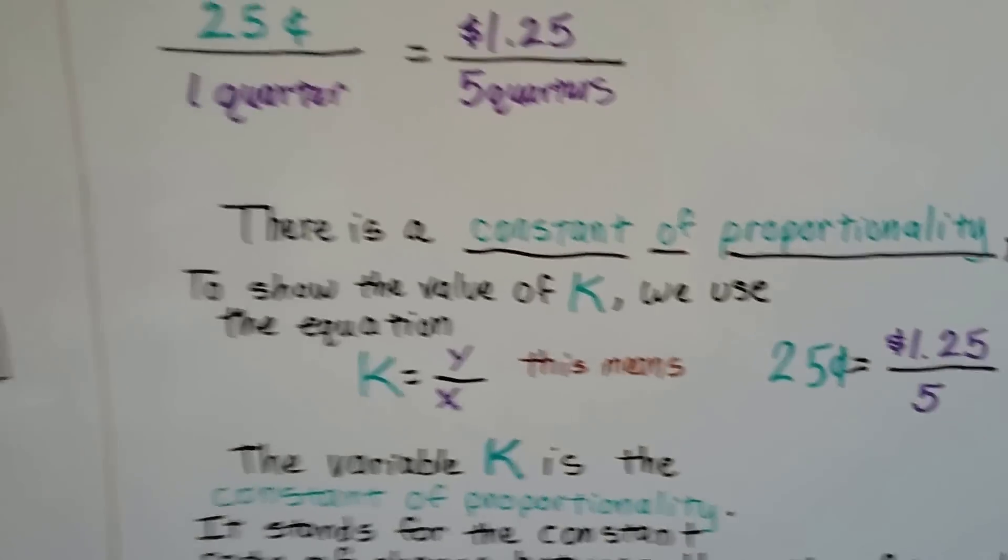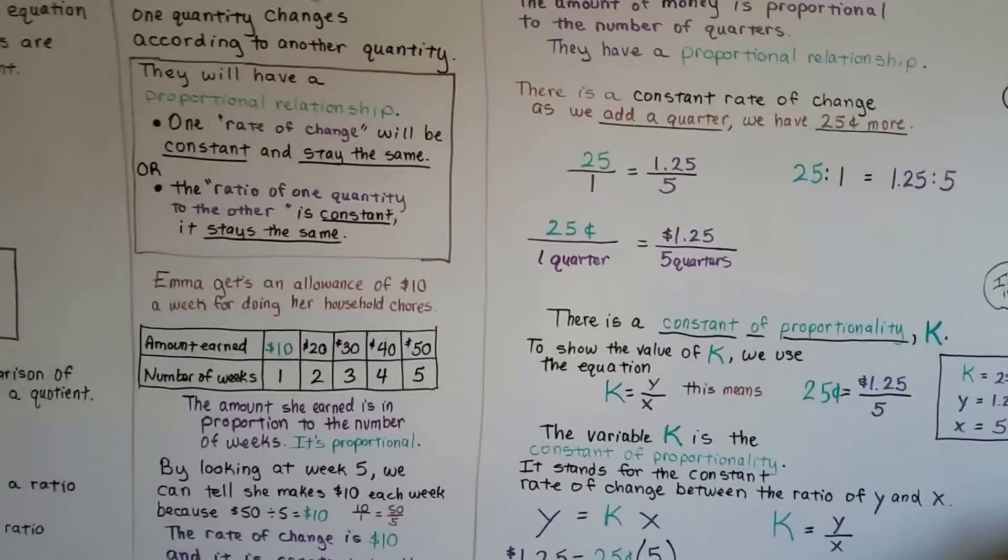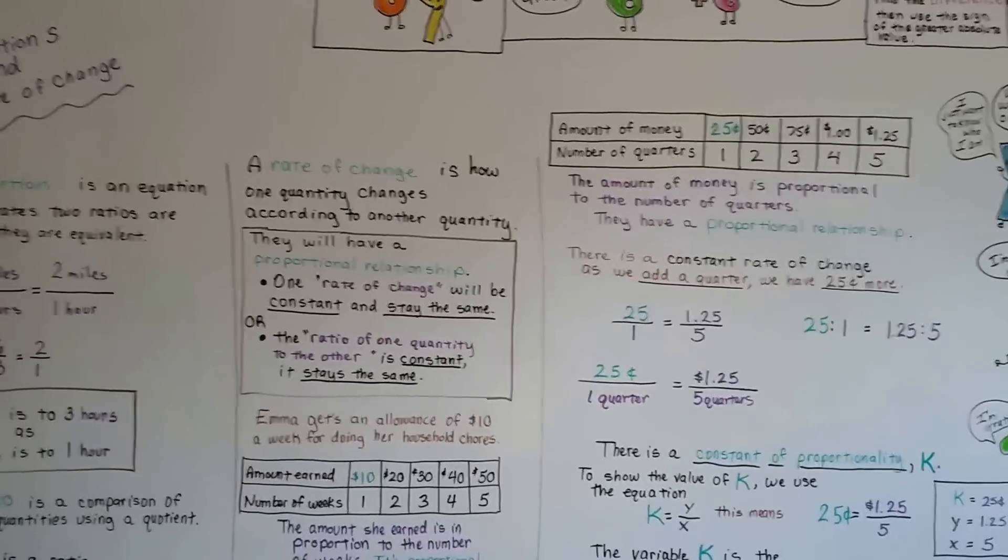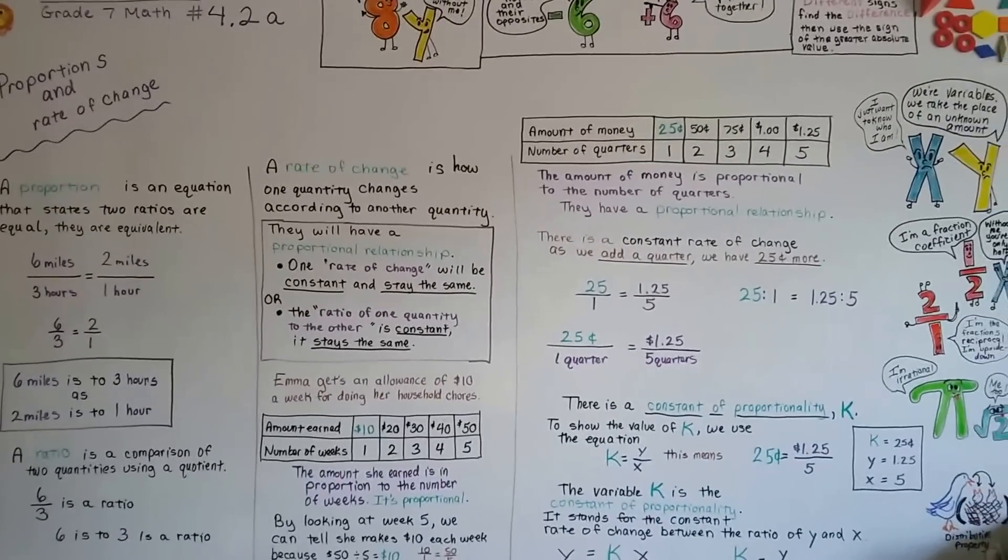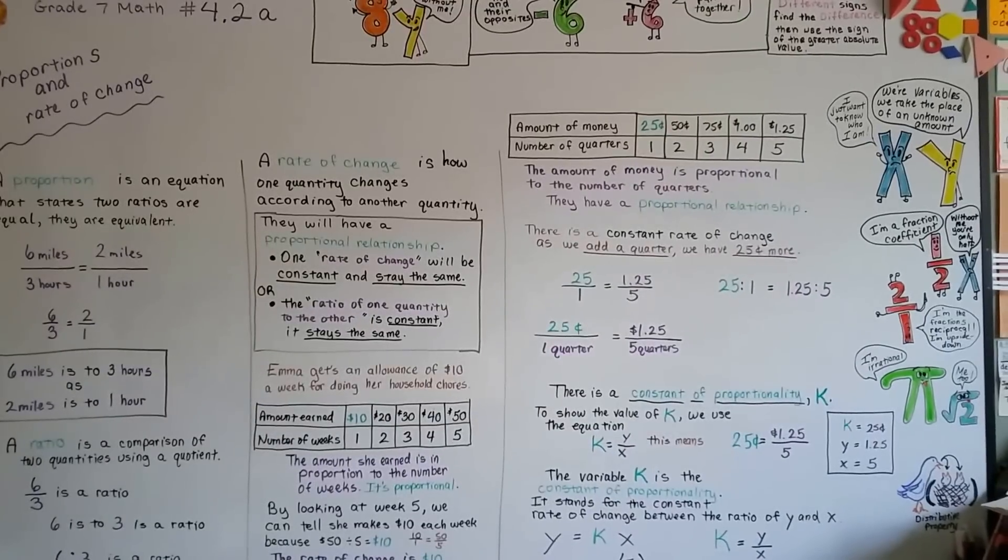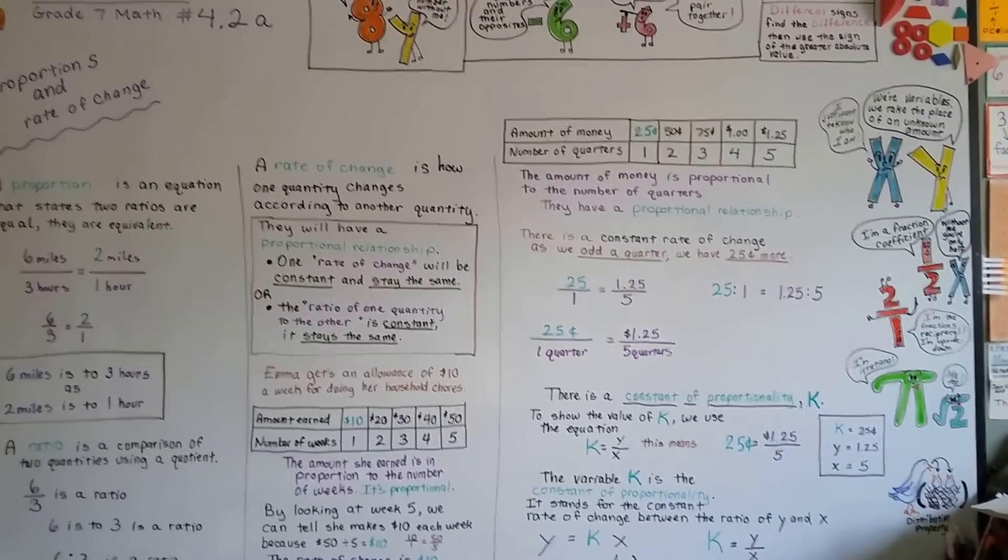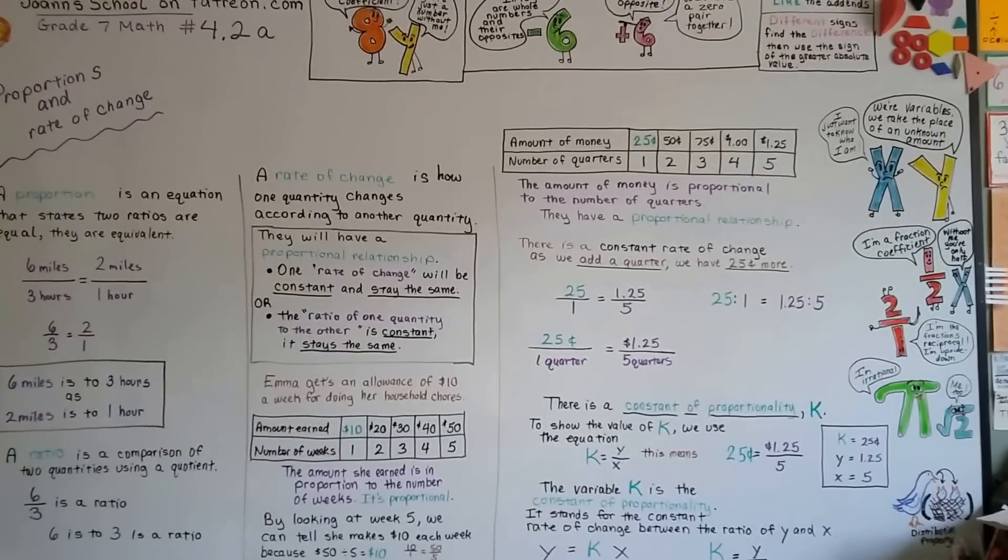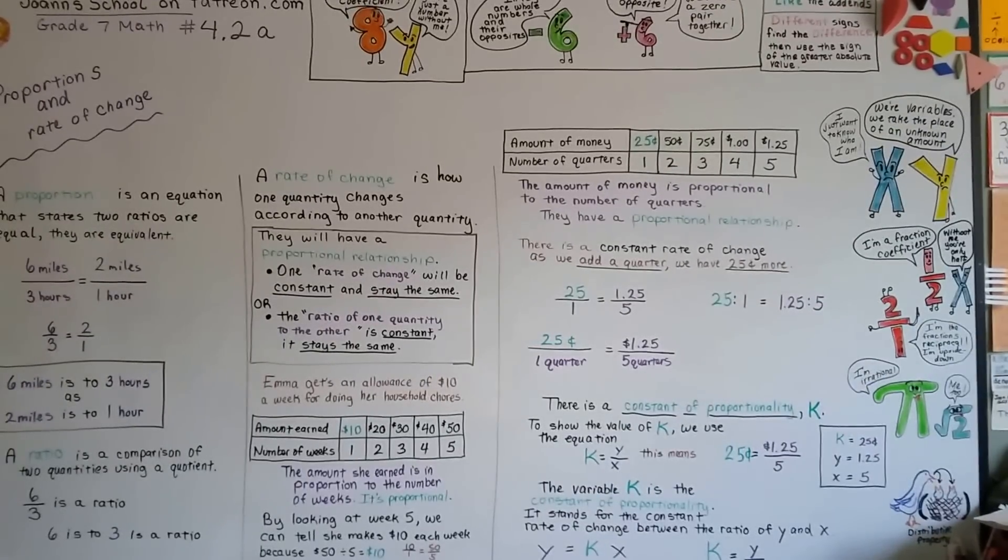I'll talk about this more in 4.2b with more examples. This chapter is all about proportions and rates of change. I hope this was clear and helped you understand. Don't forget I'm on Patreon if you want to support Joanne's School. See you next video!